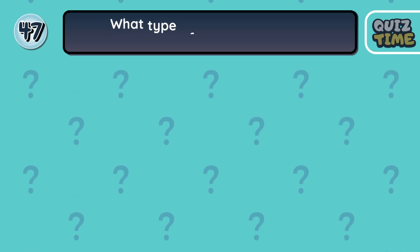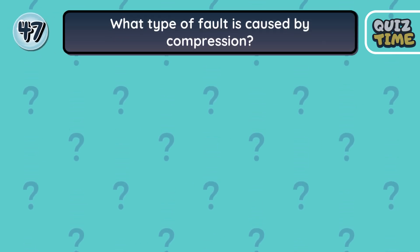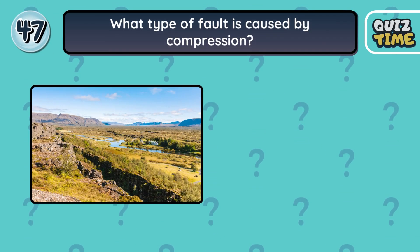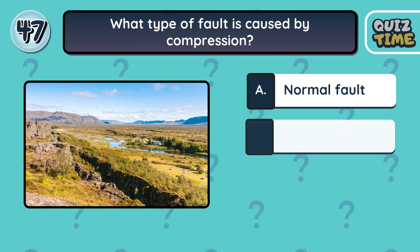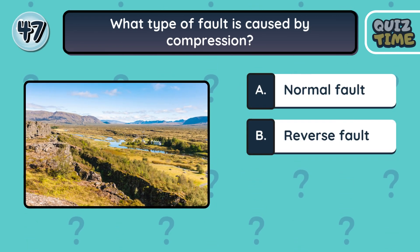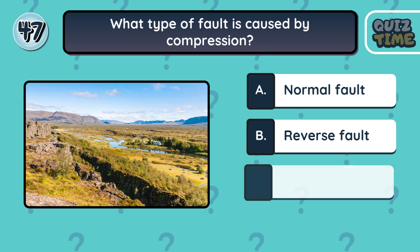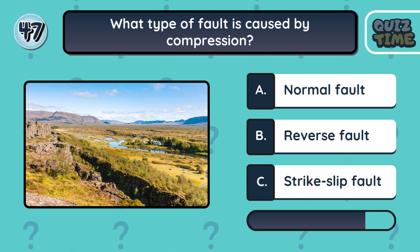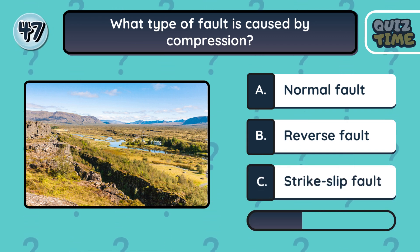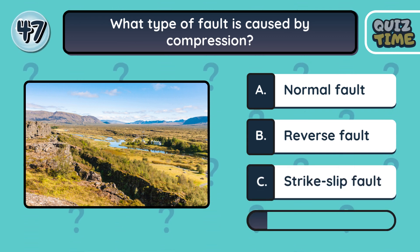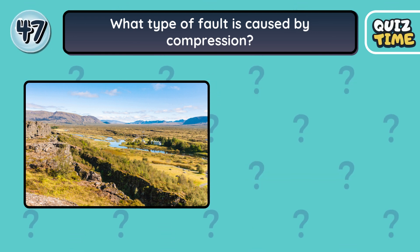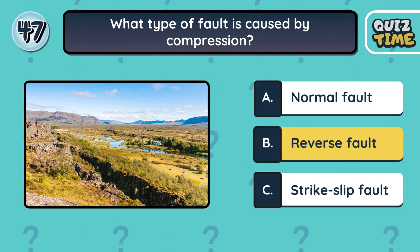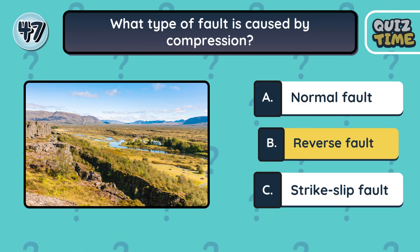Number 47. What type of fault is caused by compression? A. Normal fault. B. Reverse fault. C. Strike-slip fault. The correct answer is B. Reverse fault.